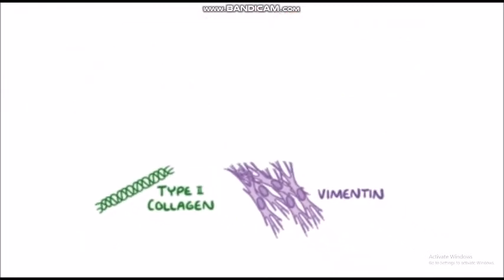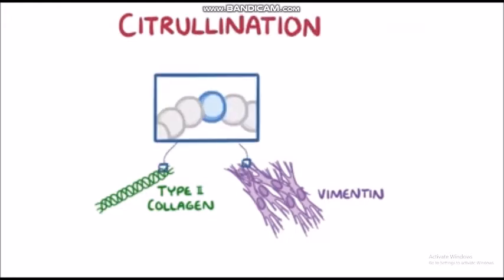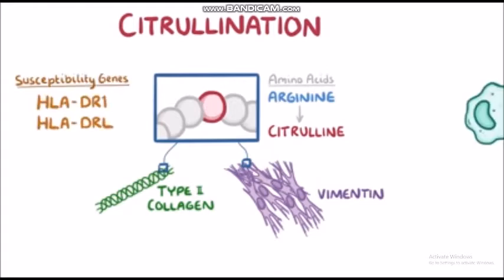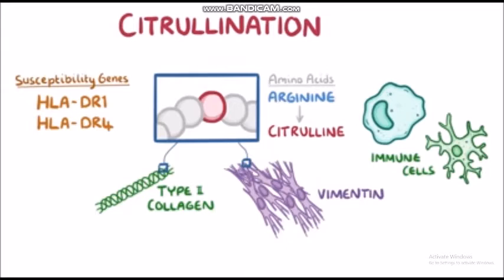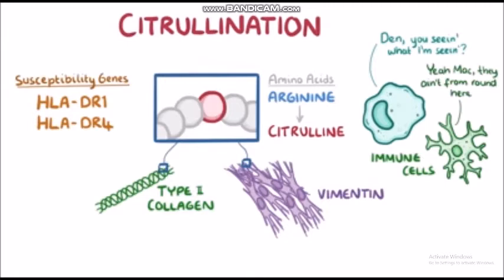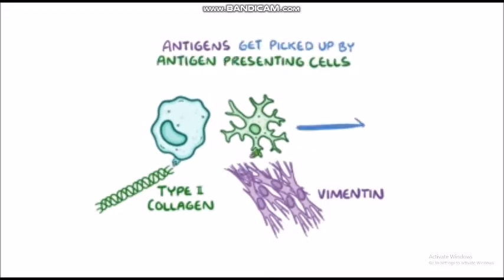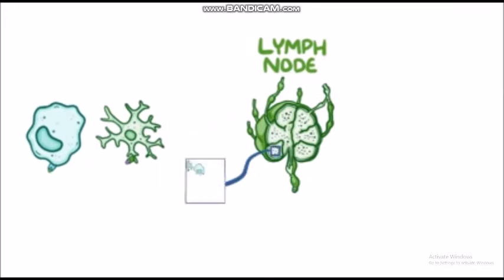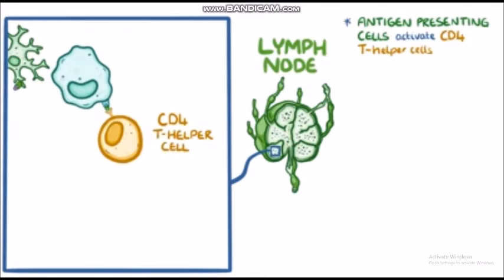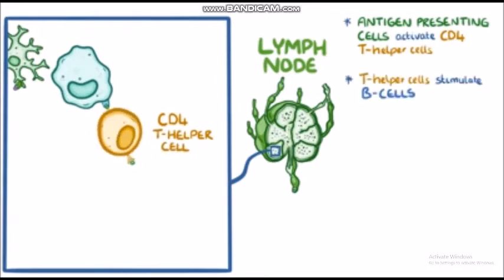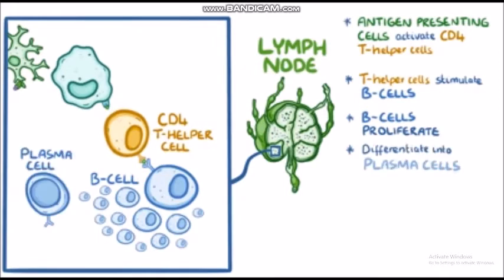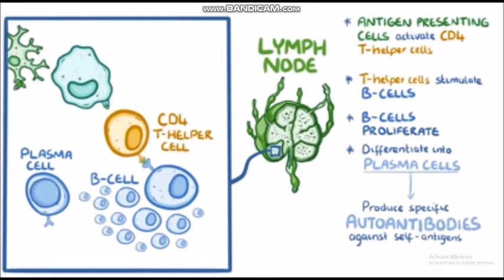Type 2 collagen and vimentin can get modified through a process called citrullination — that's when the amino acid arginine found in these proteins is converted into another amino acid, citrulline. Meanwhile, due to the susceptibility genes HLA-DR1 and HLA-DR4, immune cells are sometimes not clever enough, so they get confused by these changes and no longer recognise these proteins as self-antigens. The antigens get picked up by antigen-presenting cells and carried to the lymph nodes to activate CD4 T helper cells. T helper cells stimulate nearby B cells to proliferate and differentiate into plasma cells, which produce specific autoantibodies against these self-antigens.